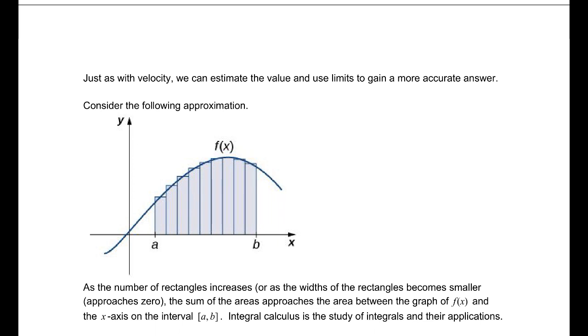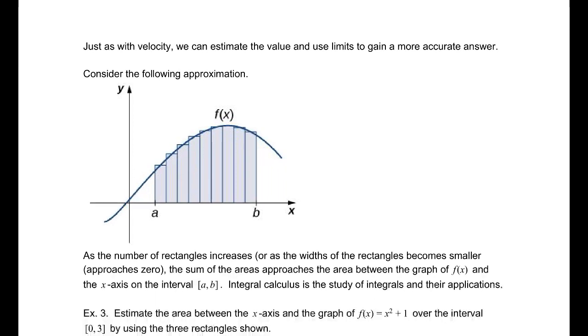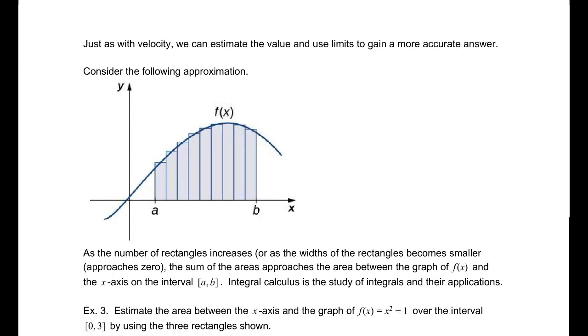The area of those rectangles could very well be, and it appears to be very close to the actual area under the curve from a to b, if that's the same curve, and we intend that it is. However, there is some error. This rectangle, for instance, is actually over the curve, whereas it's also a little bit under. Over here, most of these are over, but there's also some under. So it's going to be close, but it's not going to be perfect. It's not going to be 100% accurate. However, as the number of rectangles increases, or as the widths of the rectangles become smaller and approach 0, the sum of the areas approaches the area between the graph f(x) and the x-axis over the interval [a, b]. Integral calculus is the study of integrals and their many physical applications.